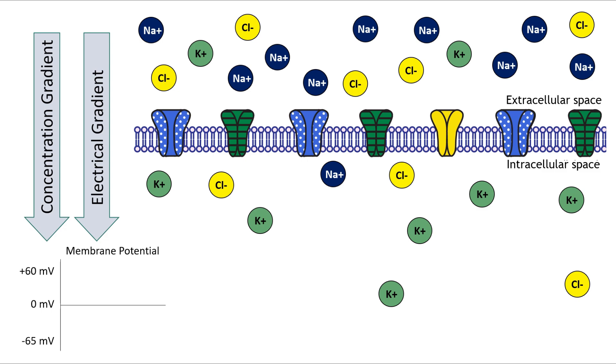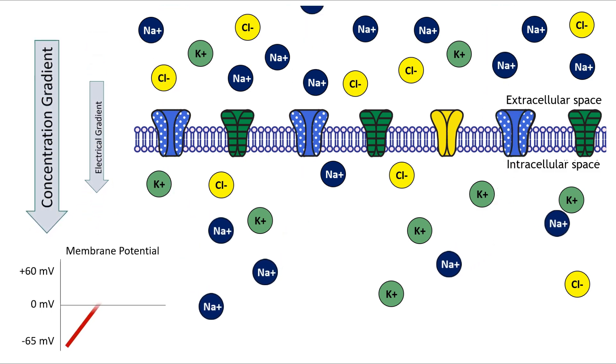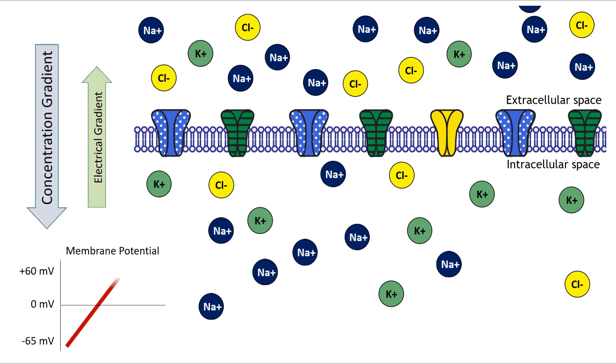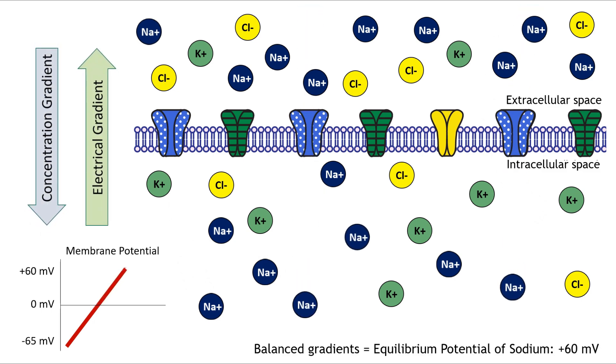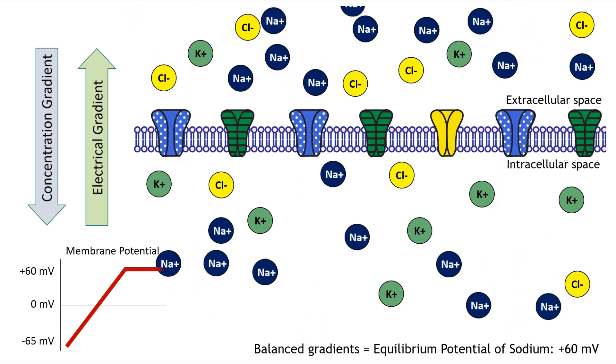As sodium enters and the inside becomes more positive, the electrical gradient weakens. Eventually, if the membrane potential becomes positive enough, the electrical push outward cancels the inward pull from the concentration gradient. And for many neurons, sodium's equilibrium potential is about plus 60 millivolts. Once the membrane approaches plus 60 millivolts, sodium has no net movement.